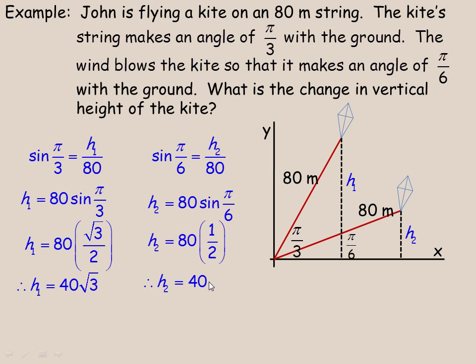So those are the two heights. So we want the change in height, so we would subtract these to get the change in height. Delta is a, the Greek letter delta stands for change in. So change in height is the 40√3 minus the 40.